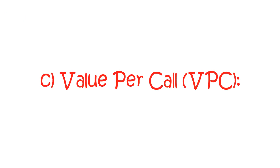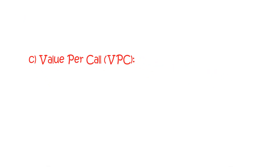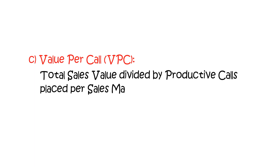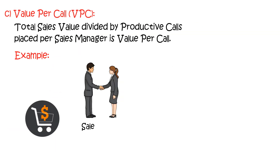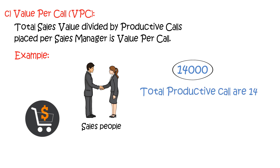Thirdly, value per call: total sales value divided by productive calls per sales manager. For example, suppose total sales done by a salesperson is Rs. 14,000 and total productive calls are 14. Then, value per call is Rs. 1,000.